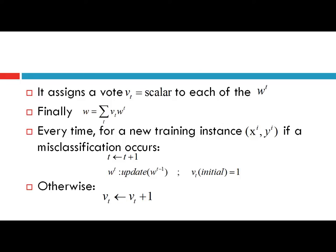This is the overall picture: it assigns a vote to each weight vector wt. The final weight vector is given as the voted sum or weighted sum of all weight vectors wt encountered during the learning process. Every time for a new training instance xi, yi, if a misclassification occurs, a new weight vector wt is updated over the previous wt-1, and a new vote vt is initialized with value 1. If no classification error occurs, the vote for the current weight vector wt is increased by 1.